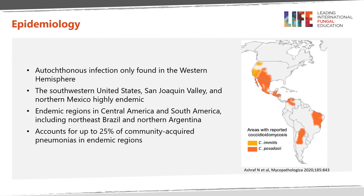Autochthonous infection is only found in the western hemisphere, and the fungus is particularly endemic in the southwestern United States, the San Joaquin Valley of California, and northern Mexico. Other endemic regions include parts of Central America and South America, particularly northeast Brazil and northern Argentina. In areas where the fungus is endemic, it may account for up to 25% of community-acquired pneumonia.